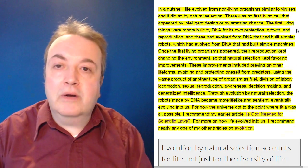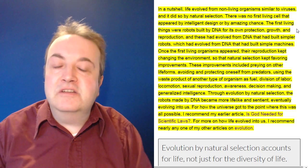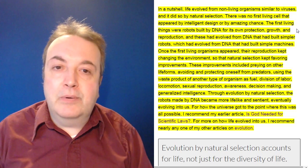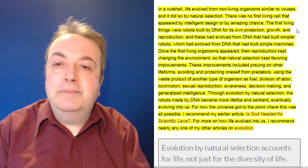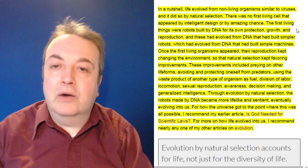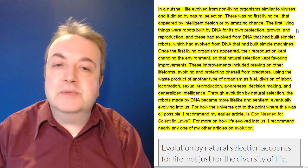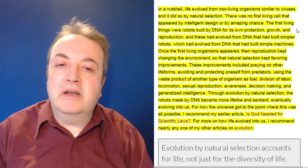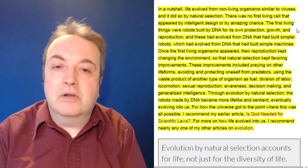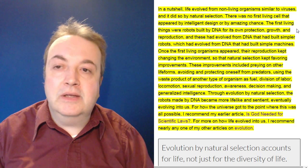In a nutshell, life evolved from non-living organisms similar to viruses, and it did so by natural selection. There was no first living cell that appeared by intelligent design or by amazing chance. The first living things were robots built by DNA for its own protection, growth, and reproduction, and these had evolved from DNA that had built simpler robots which had evolved from DNA that had built simple machines. Once the first living organisms appeared, their reproduction kept changing the environment so that natural selection kept favoring improvements. These improvements included preying on other life forms, avoiding and protecting oneself from predators, using the waste product of another type of organism as fuel, division of labor, locomotion, sexual reproduction, awareness, decision-making, and generalized intelligence. Through evolution by natural selection, the robots made by DNA became more lifelike and sentient, eventually evolving into us.